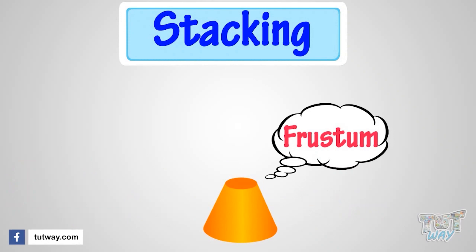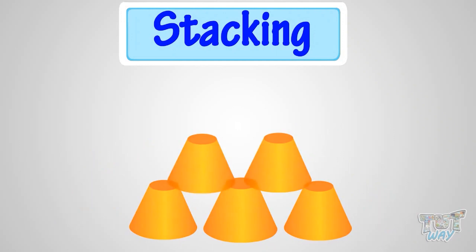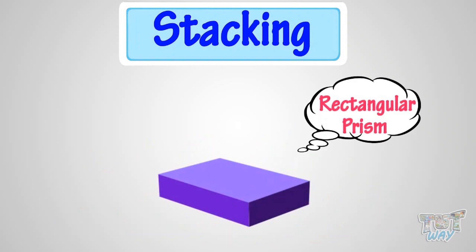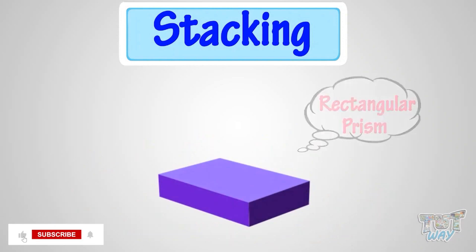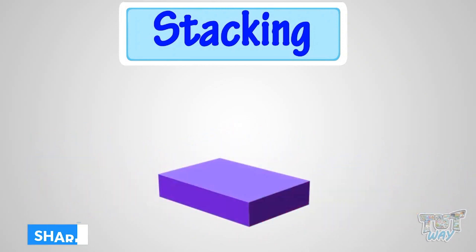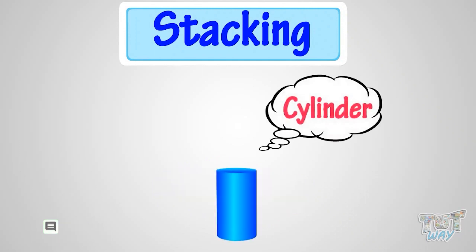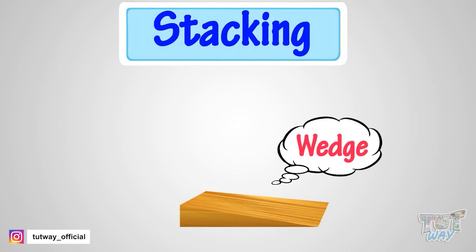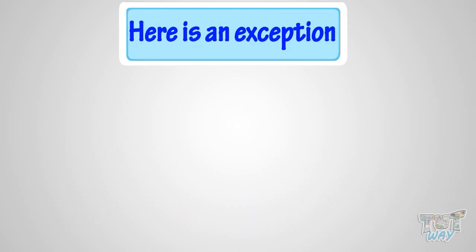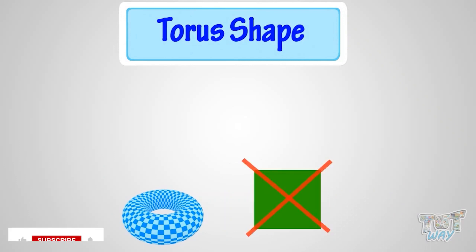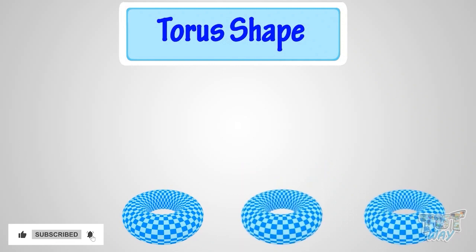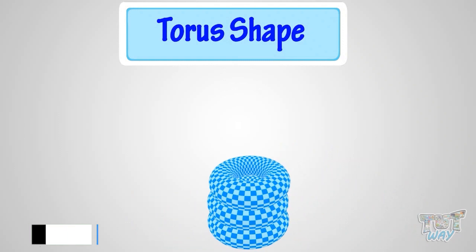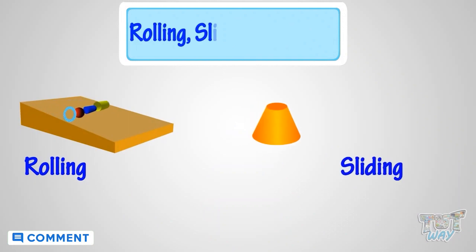A frustum — yes, we can stack frustum shapes as they have two flat faces. A rectangular prism — yes, we can stack rectangular prisms as they have all flat faces. A cylinder can be stacked as it has flat faces on both top and bottom. A wedge shape can also be stacked as it has flat faces. Here is an exception: a torus shape has no flat face, but torus shapes can be stacked upon each other.